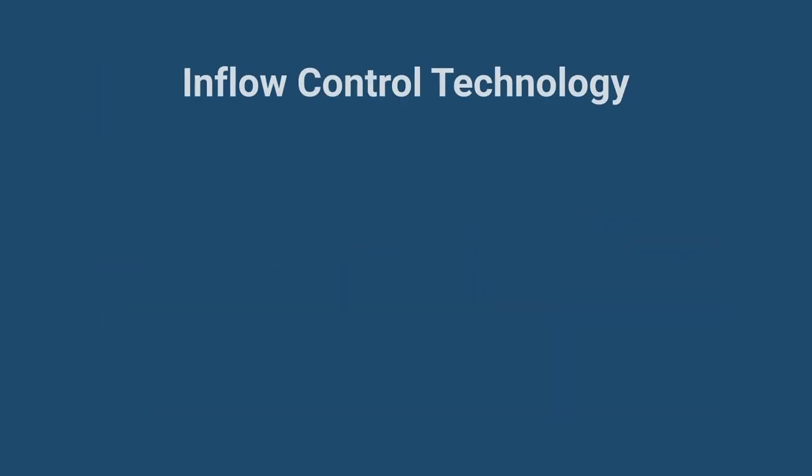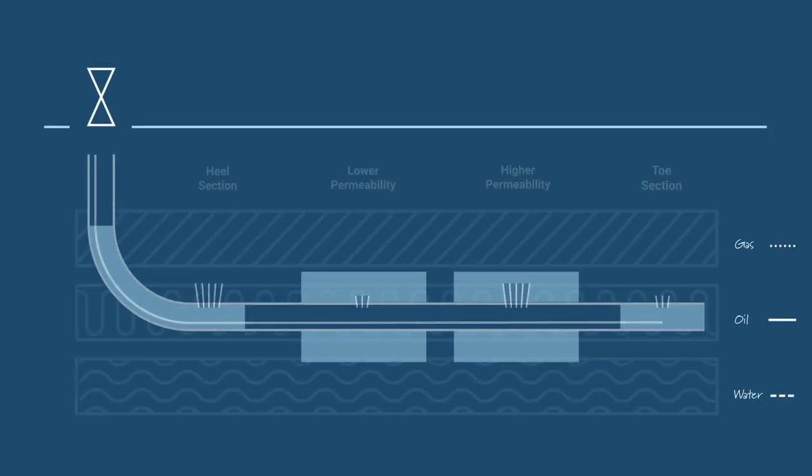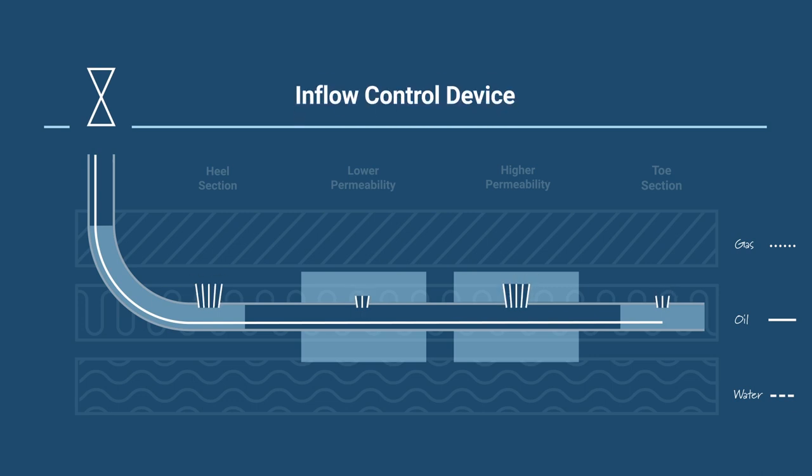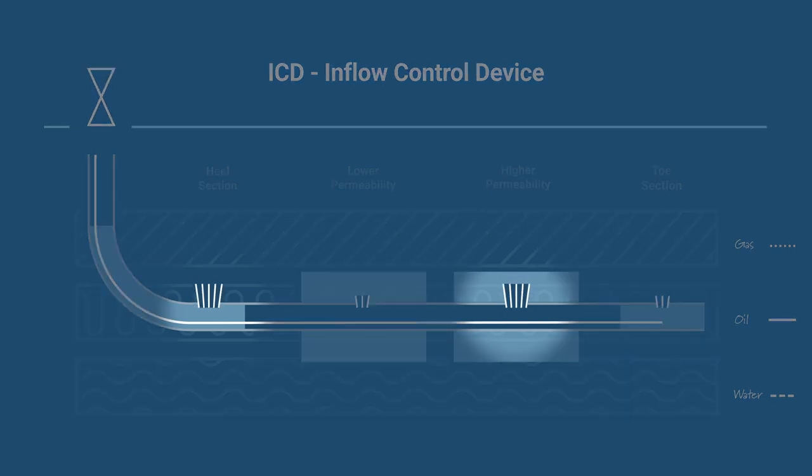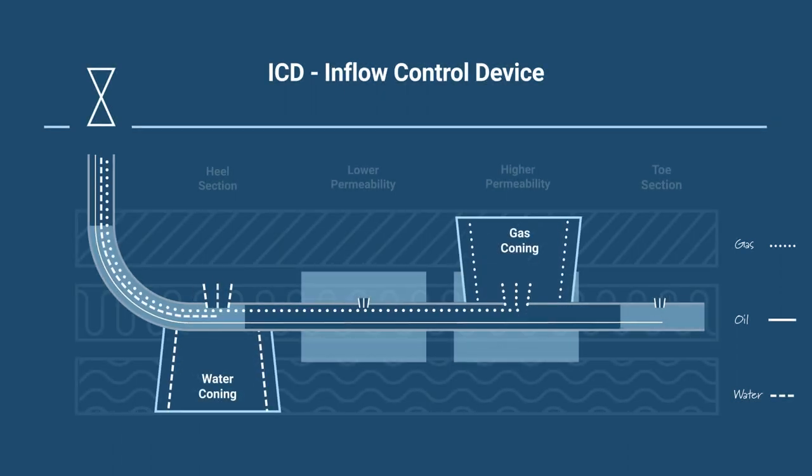Inflow control technology can be divided into three main categories. The first category, invented in the 1990s, was the inflow control device, or ICD. This was the first device to delay water or gas breakthrough by balancing the initial non-uniform oil production. However, it cannot choke either water or gas once the fluids eventually enter into the production stream.